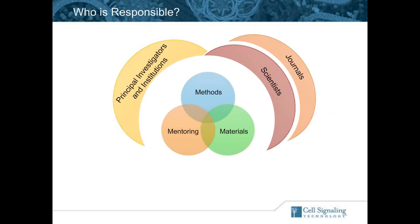We also think that journals are complicit in ensuring that materials and methods are clearly documented and identified in their publications. There are clearly many Western blots in published articles but nowhere are there citations for the antibody. It's important that journals establish rules and guidelines showing what's needed to properly cite and reference an antibody when you use it.